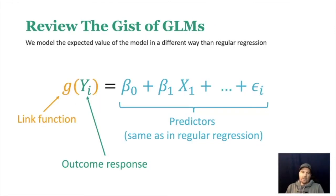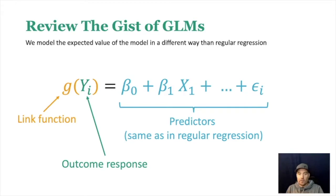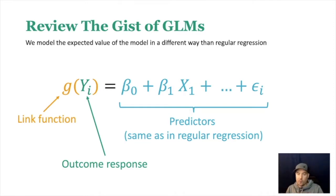As a reminder, the idea of a GLM is basically a regression, but where you wrap up the outcome in a link function. It's this transformation that changes what it looks like, and it makes it so we can use regular regression to understand the information, even when the distribution doesn't normally work for regression.